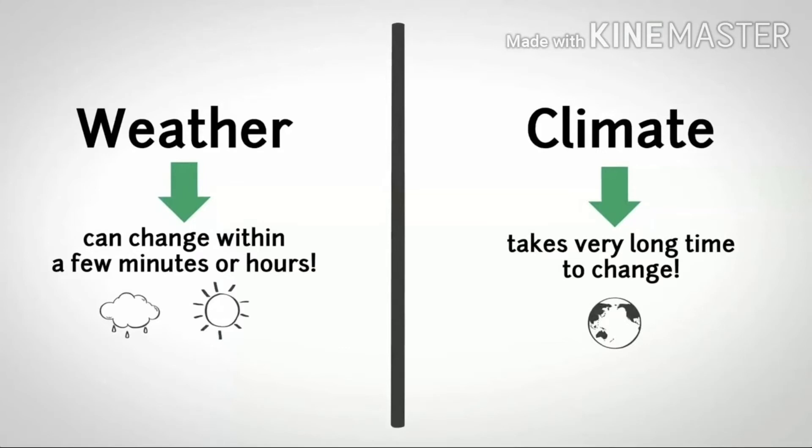If you say 'the climate today is too hot or cold,' that statement is wrong, because what is changing is weather. Climate takes a very long time to change. Climate is constant, but when it does change, it changes over a very slow period of time.